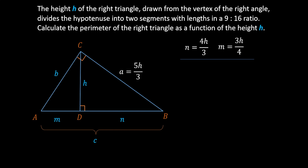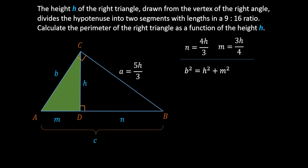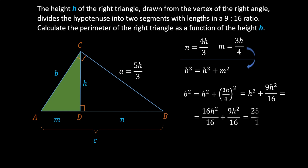For leg B, we look at triangle ADC, which is also a right triangle, so the Pythagorean theorem applies: B squared equals H squared plus M squared. Substituting M = 3H/4, we get B squared equals H squared plus 9H squared over 16. Expanding H squared with 16 to get a common denominator gives 25H squared over 16. Therefore B equals 5H over 4.